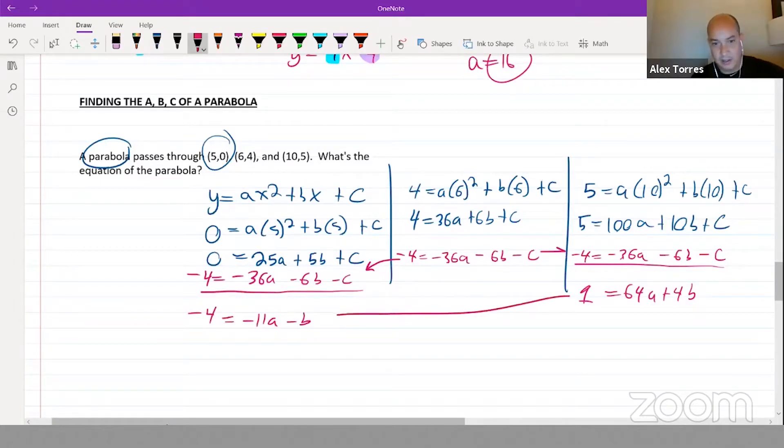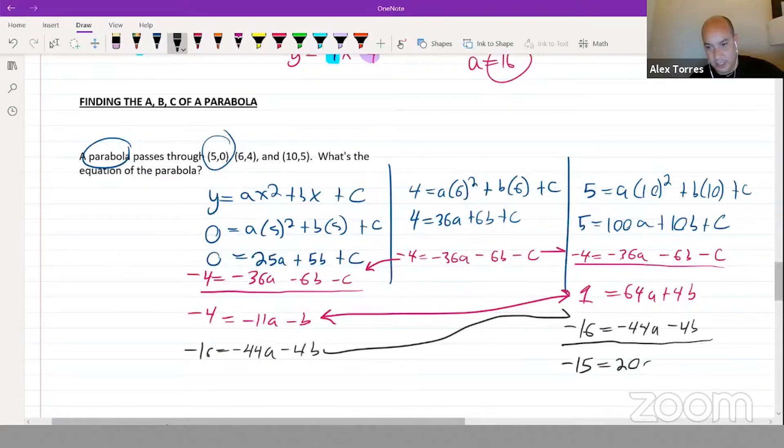So right now we have a nice system of equations with two equations and two variables, so it'll solve nice and easily. I can multiply this one maybe by four to get the b's to cancel out: negative 16 equals negative 44a minus 4b. Plug that back into the other one and negative 15 equals 20a.